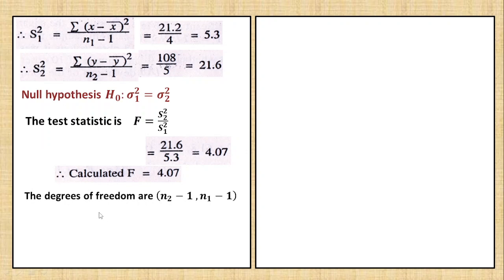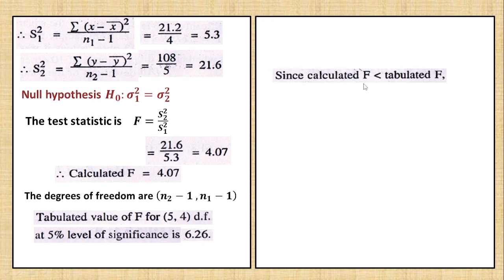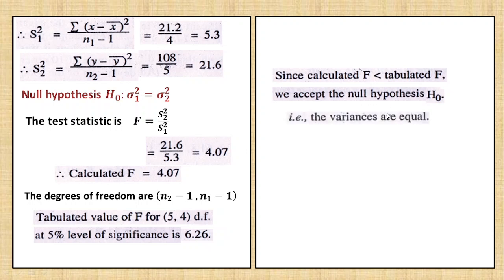We need the degrees of freedom. The numerator degrees of freedom is n2 minus 1, and the denominator degrees of freedom is n1 minus 1. Since n2 is 6, that gives 5; and n1 is 5, giving 4. At the 5% level of significance, the table value is looked up. Since the calculated F value is less than the table value, we accept the null hypothesis H0, which means the two population variances are equal. Since F-test is accepted, we now go to the T-test.